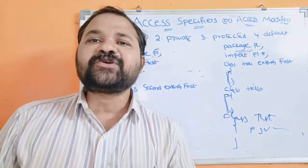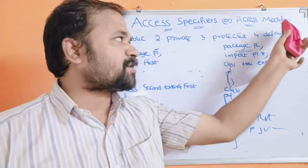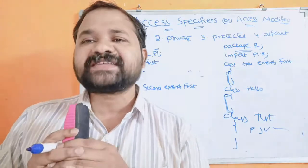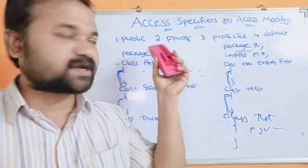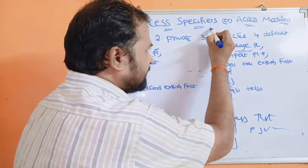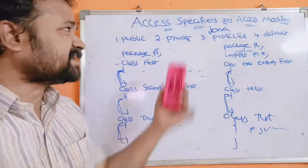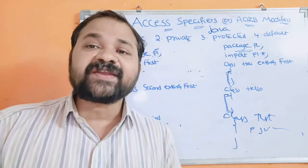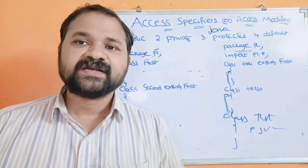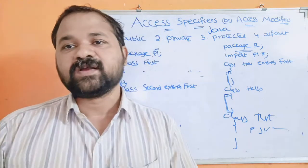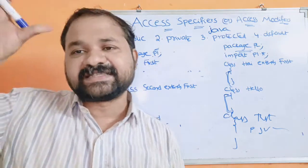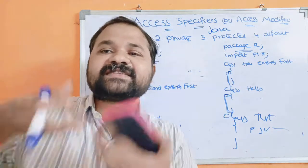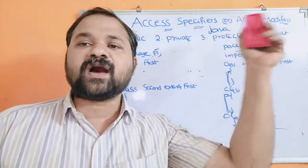In this video, we are going to discuss about access specifiers or access modifiers in Java programming language. Mainly we have four access specifiers: public, private, protected, and default. Access specifiers mainly specify the behavior of a class and its members such as instance variables and methods — where we can access the class, instance variables, and methods.